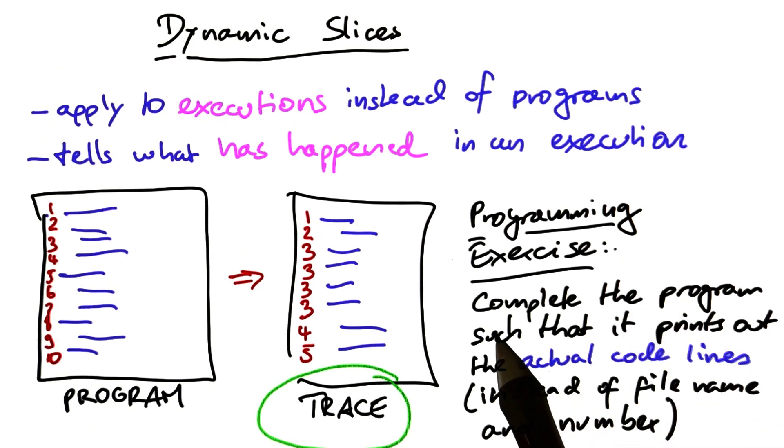Now for a bit of programming exercise. Complete the program which you've just seen such that it prints out the actual code lines instead of just the file name and number. That is, replace the output of file name and number by the actual code line that is in that file at this position.